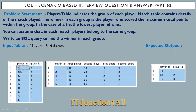For example, if player ID 15 and player ID 30 score the same points, then player ID 15 will be the winner. You can see the expected output table — we want the winner in each group. Let's see how we can do this in SQL Server.